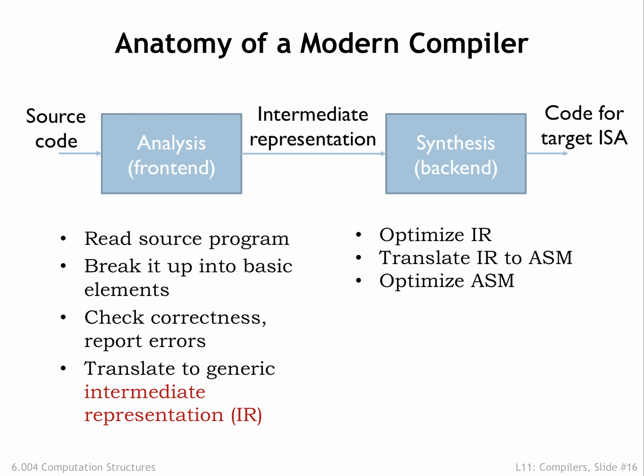The synthesis, or back-end, phase then optimizes the intermediate representation to reduce the number of operations that will be executed when the final code is run. For example, it might find operations inside of a loop that were independent of the loop index and could be moved outside of the loop, where they are performed once instead of repeatedly inside the loop.